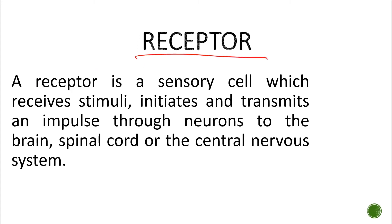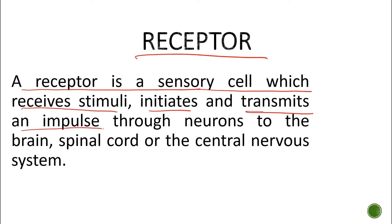A receptor is a sensory cell which receives stimuli, initiates, and transmits an impulse through the neurons to the brain, spinal cord, and central nervous system. I also encourage you to go through the topic of nerve coordination and control, where I treated extensively the nervous system and the hormonal system.